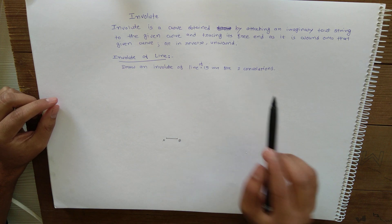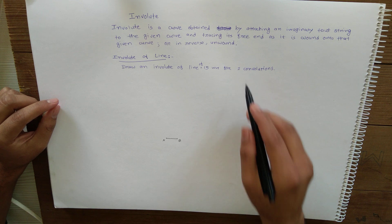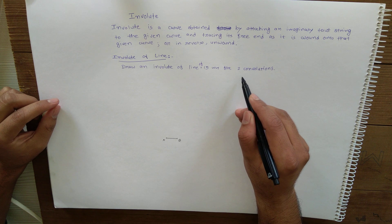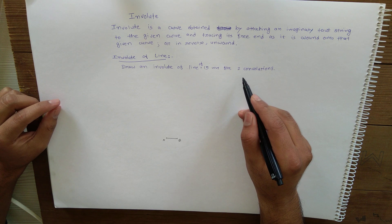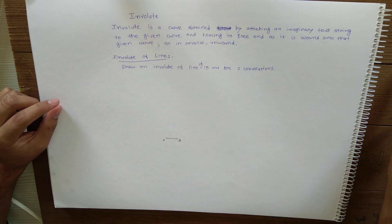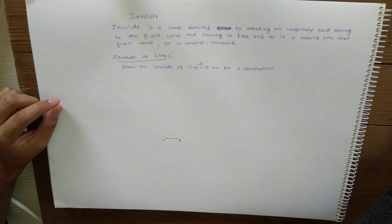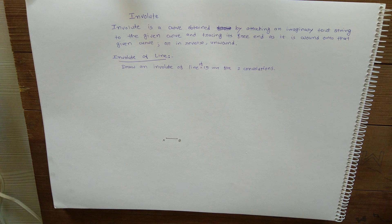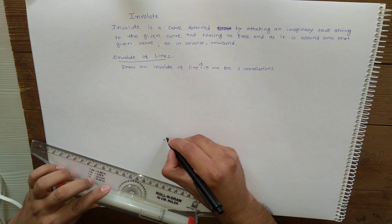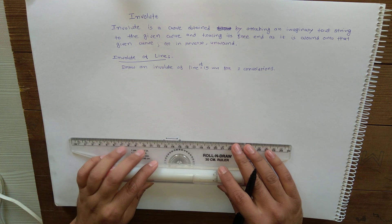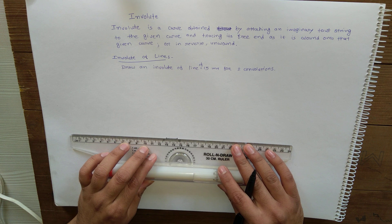...involute for two convolutions. Now, one convolution is 360 degrees, so for 720 degrees we need to generate curve. It is very simple to construct involute of line. First, extend this line for random...